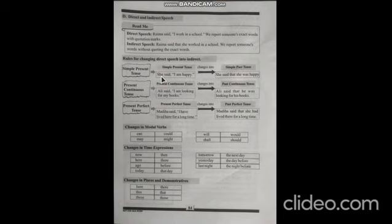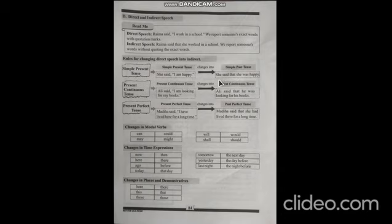First, simple present tense example: 'She said, I am happy.' This has inverted commas, so it is direct speech. To convert to indirect speech, we change it to past tense and remove inverted commas. The subject 'I' changes to 'she', and 'am' changes to 'was'. Result: She said that she was happy.